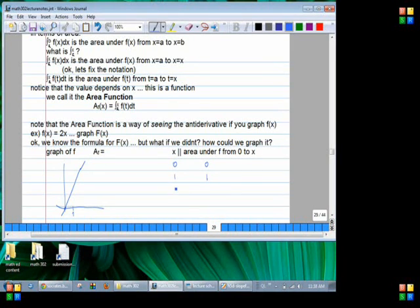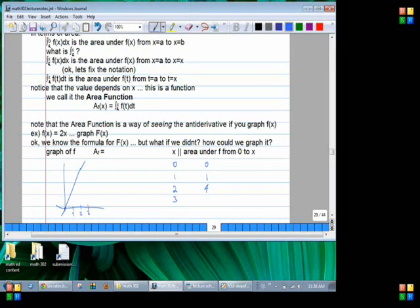What about when x is 2? 4. Right, how do we get that? 2 times 2. The base is 2, the height is 4, so half times 2 times 4 gives you 4. Next, what about when x equals 3? What's the base? 3. The height is? 6. The function is 2x, so the height is going to be 6. So half times 3 times 6 gives you 9.